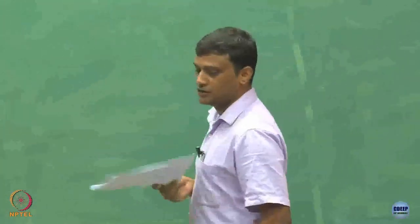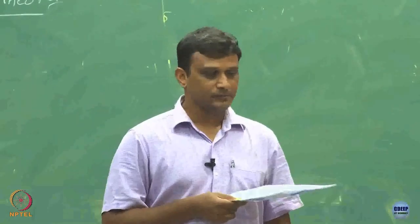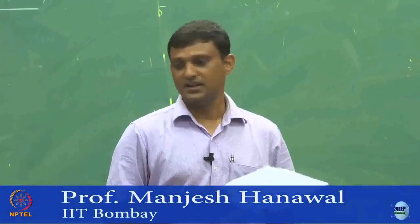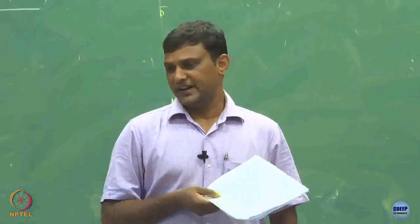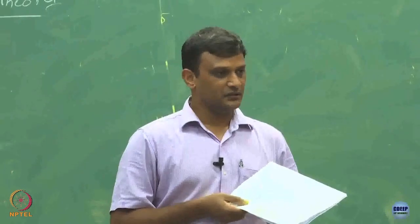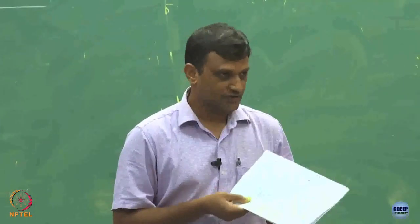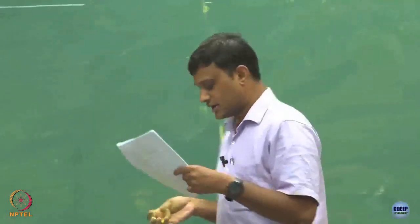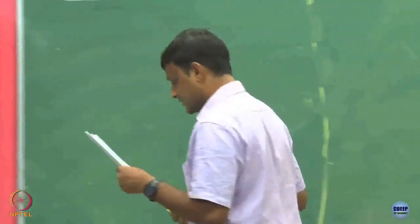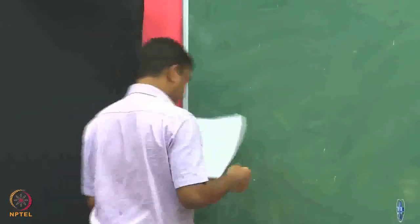Now we have some understanding of how the empty function looks like, but we have just defined one process. Based on our X_i's and Z_k's, we can actually define more random processes. So let us see what all we can discuss, what we can define. Before we do that, some properties.